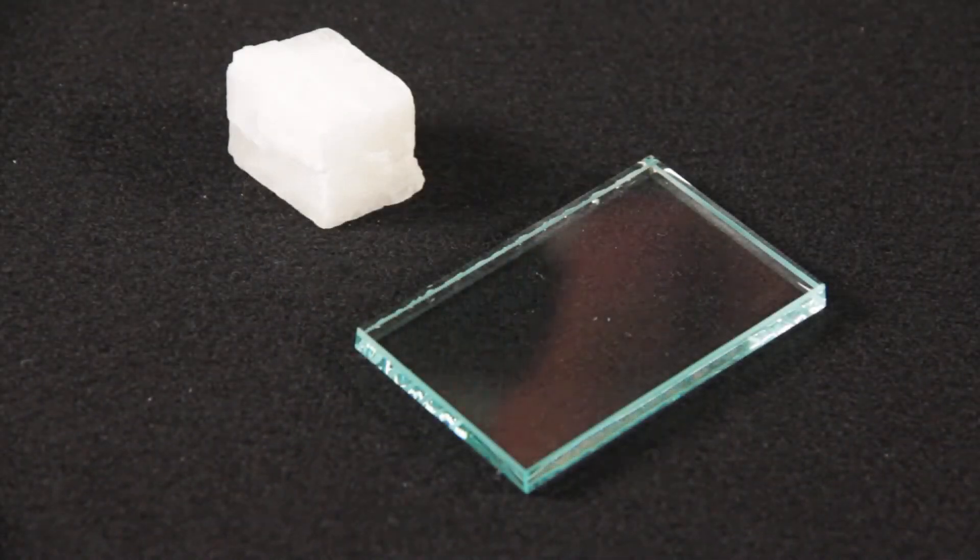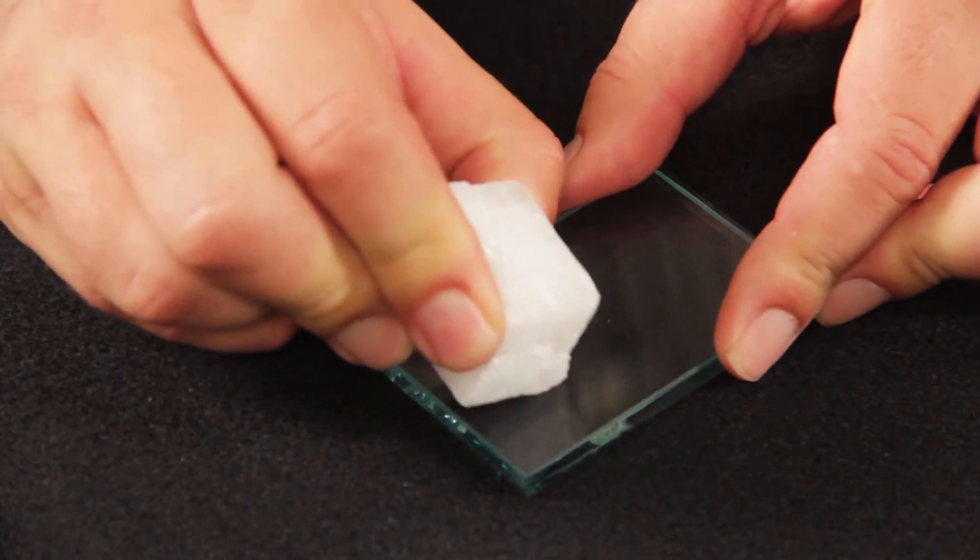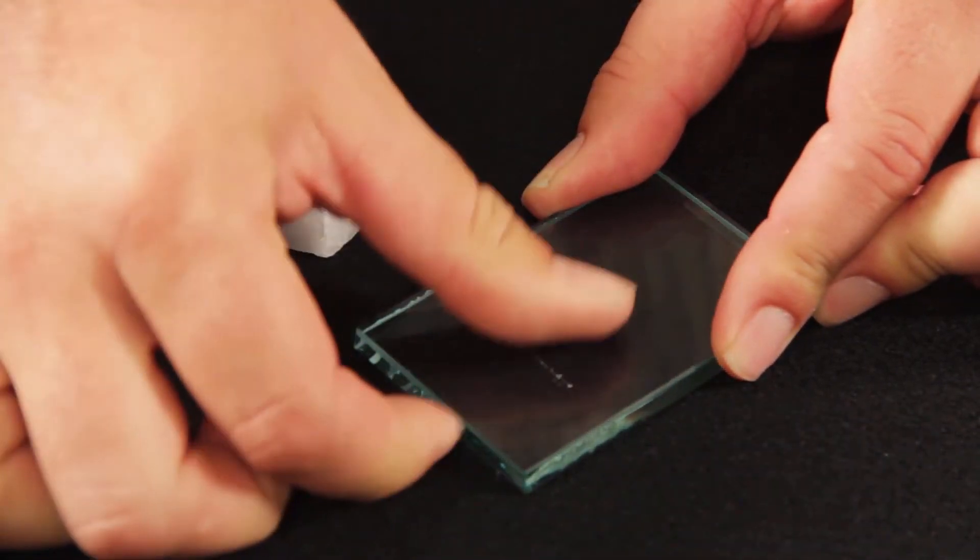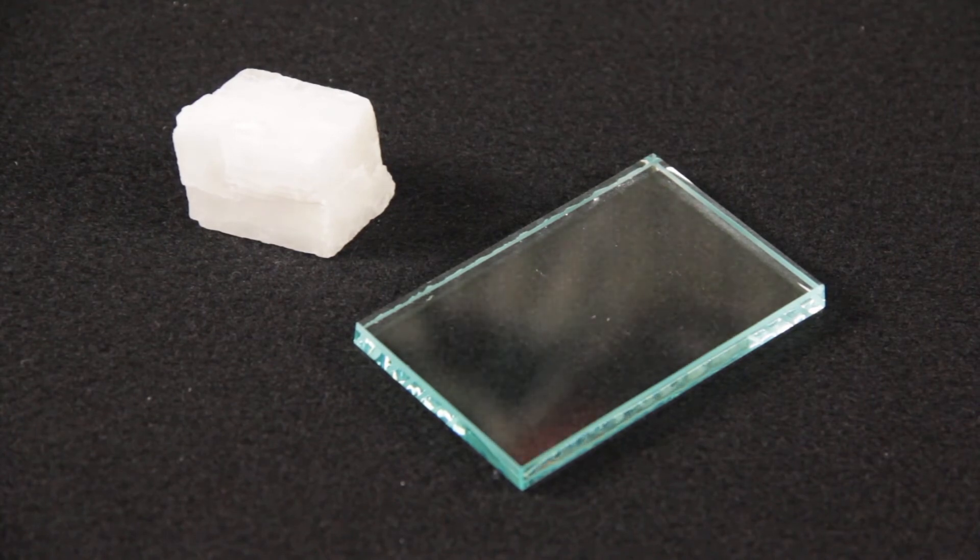When we do a test of the hardness of calcite, we start with glass, which has a hardness of 5.5. When we attempt to scratch the glass with the crystal of calcite, we see that it does not leave a scratch. This tells us that the hardness of calcite is somewhere below 5.5.